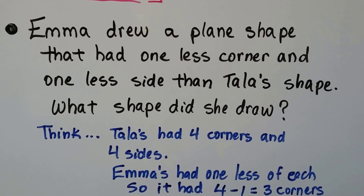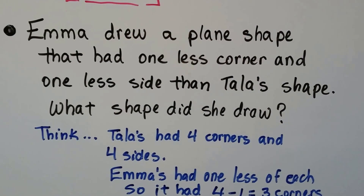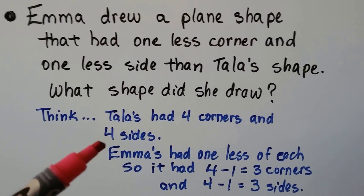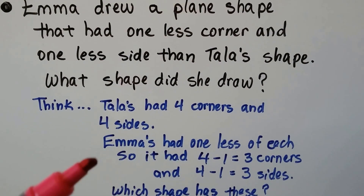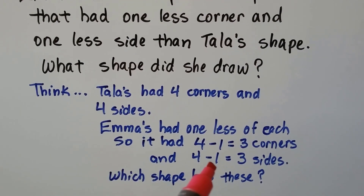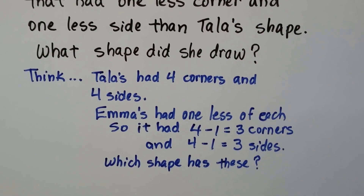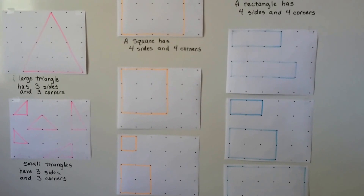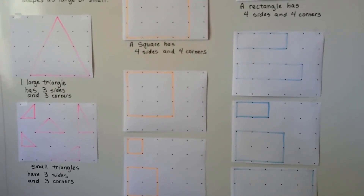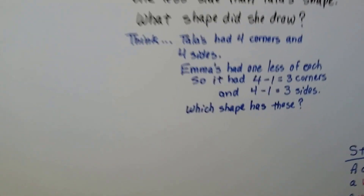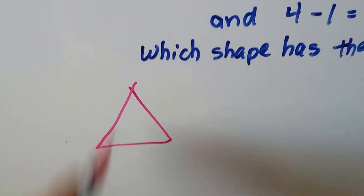Emma drew a plain shape that had one less corner and one less side than Tala's shape. What shape did she draw? Well, Tala's had four corners and four sides. So if Emma's had one less of each, it had four minus one — so three corners — and four minus one sides, so three sides. What has three corners and three sides? A triangle does — it's got one, two, three corners and one, two, three sides. So we know that Emma drew a triangle.